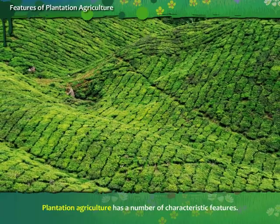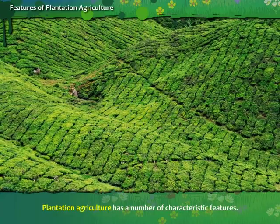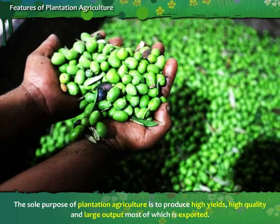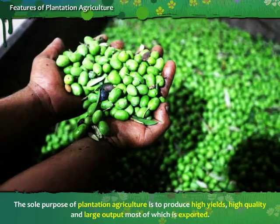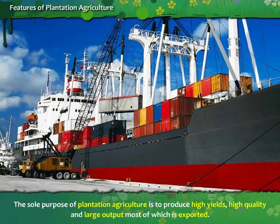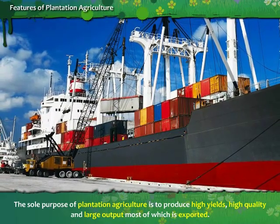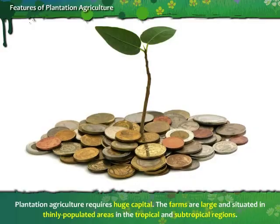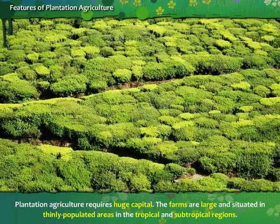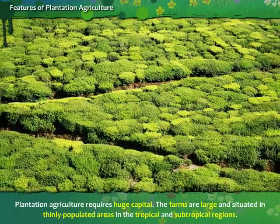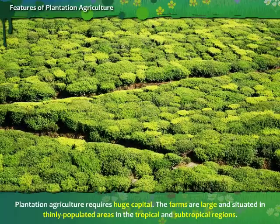Plantation agriculture has a number of characteristic features. The sole purpose of plantation agriculture is to produce high yields, high quality and large output, most of which is exported. Plantation agriculture requires huge capital. The farms are large and situated in thinly populated areas in the tropical and subtropical regions.